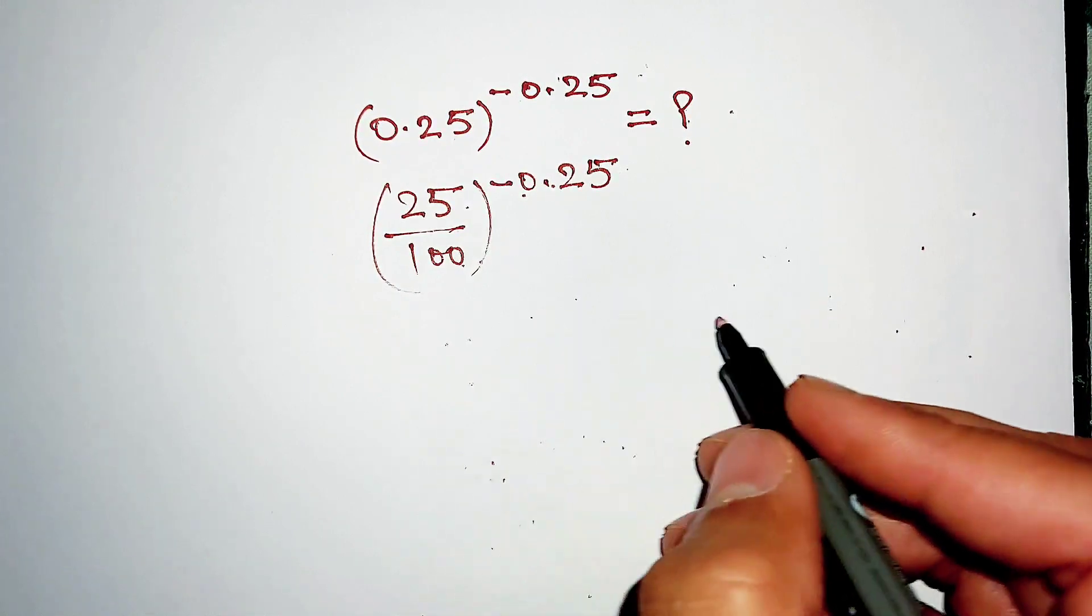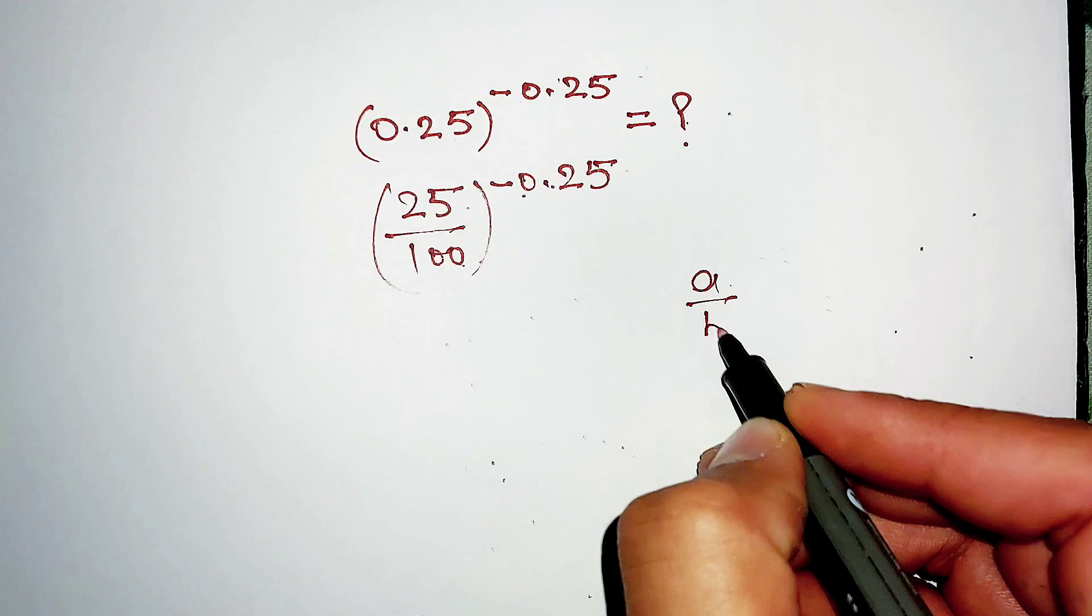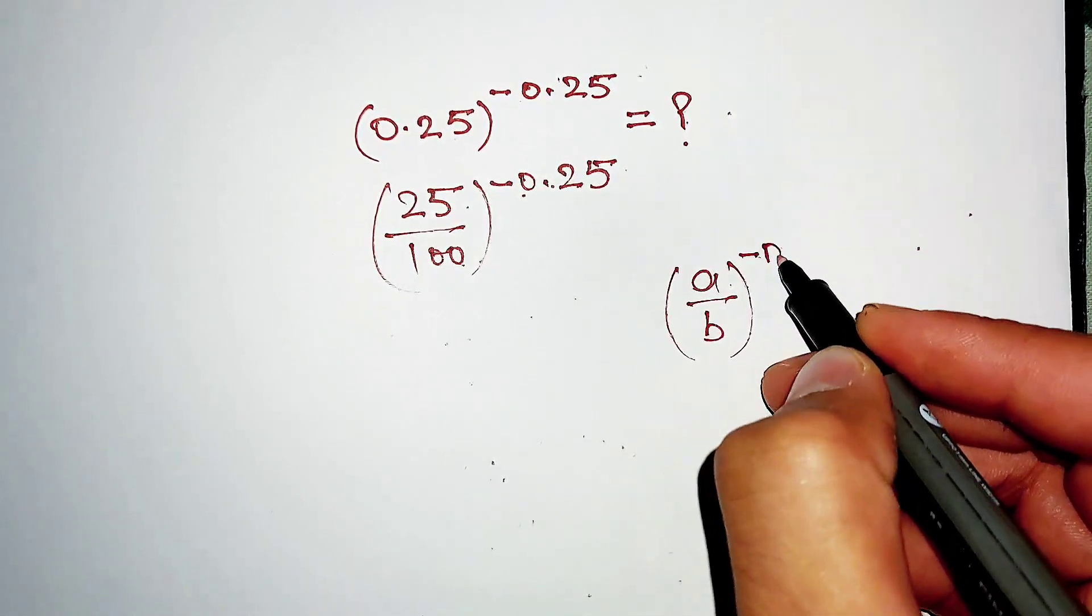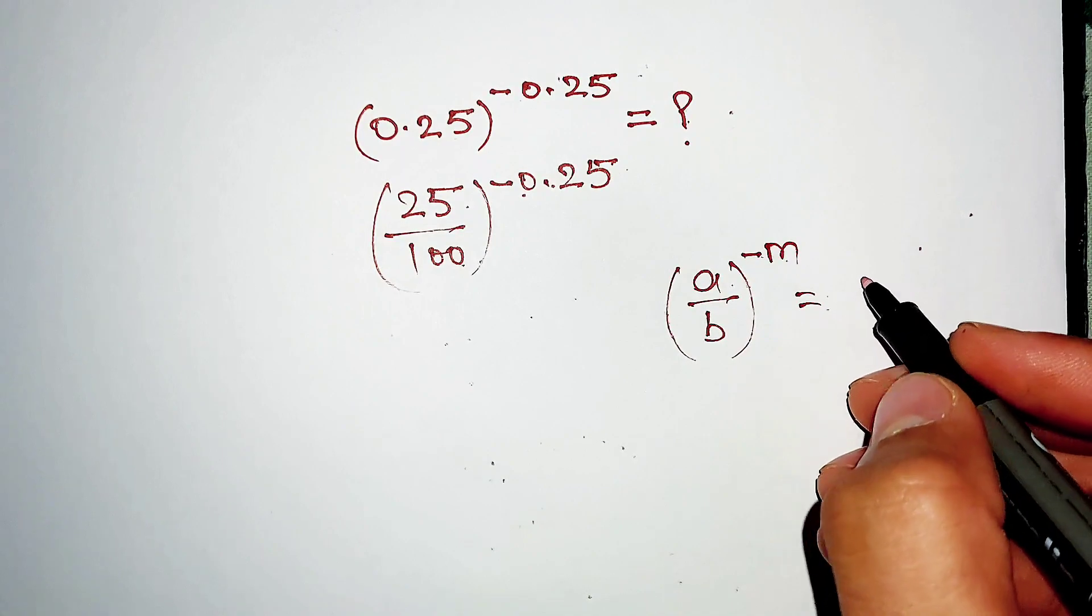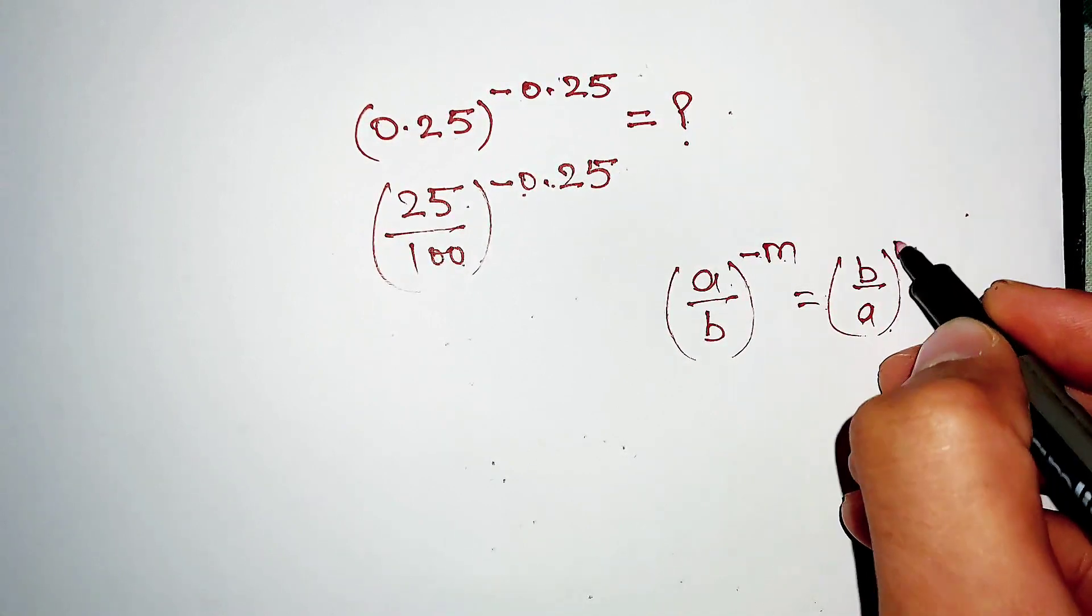Here we are using this exponential property which is (a/b)^(-m) which is equal to (b/a)^(m).